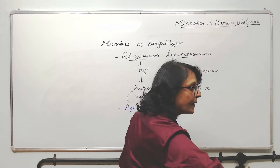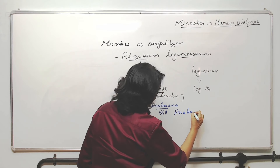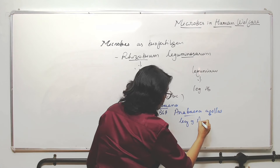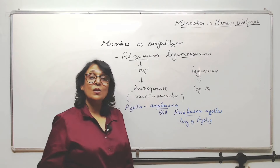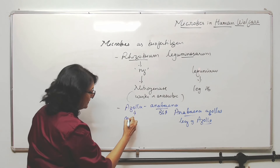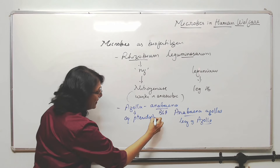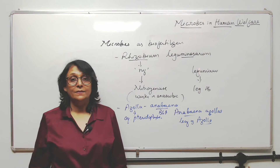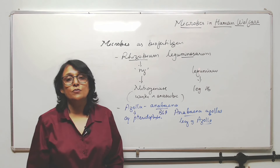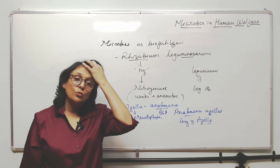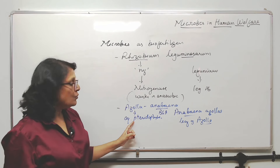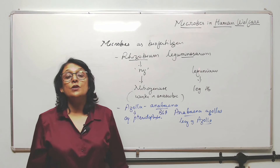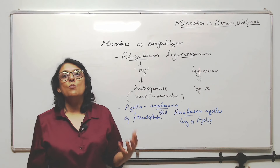Anabaena azollae is a blue-green alga found in the leaves of Azolla. Azolla is an aquatic pteridophyte that grows in water. It is said that if we grow Azolla with paddy — with the rice plantation — it increases productivity by almost 20 to 30 percent, because Anabaena is always present and helps in nitrogen fixation, giving the plants more nitrogen.